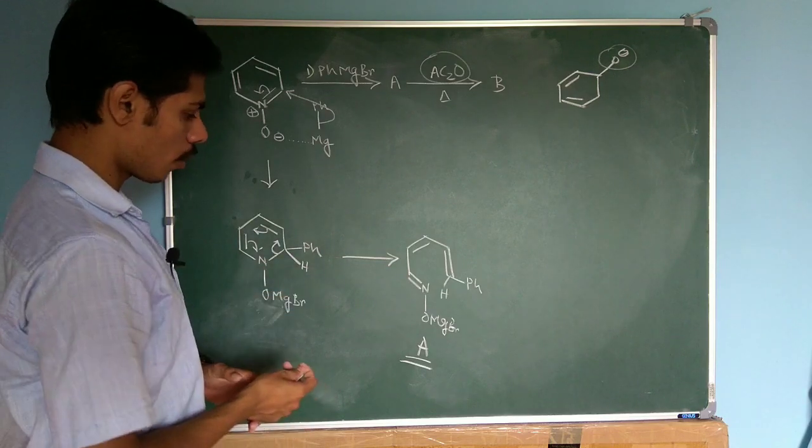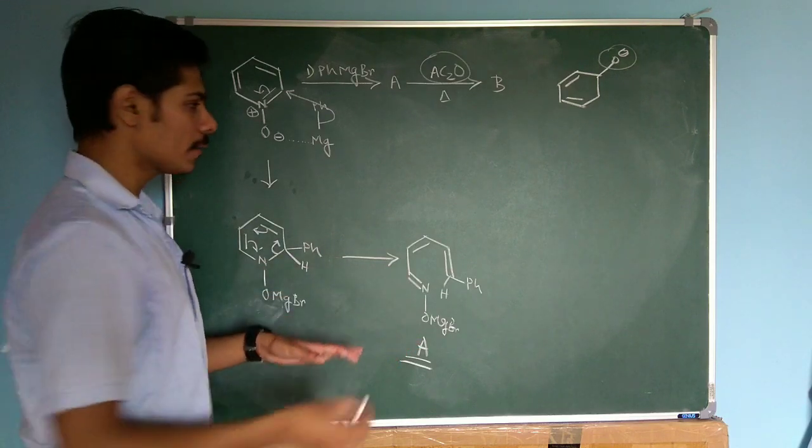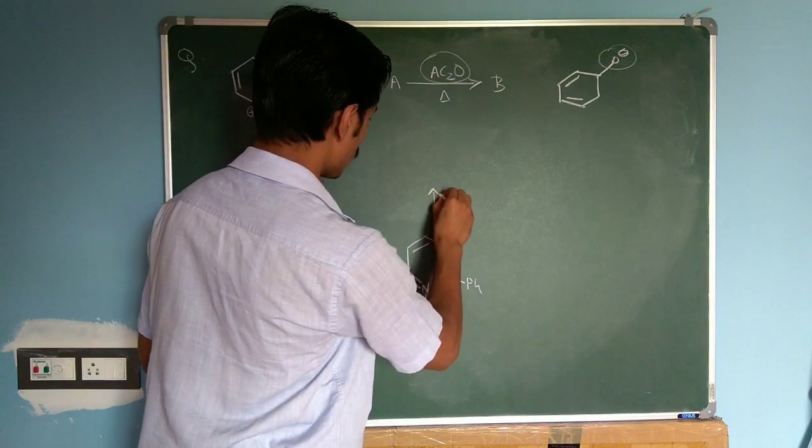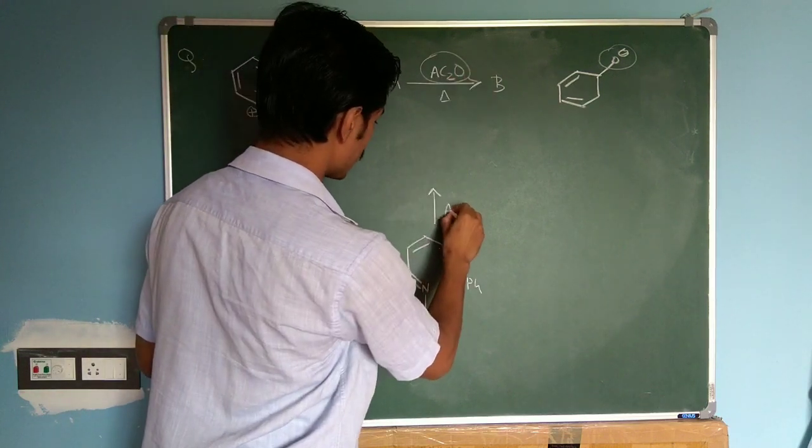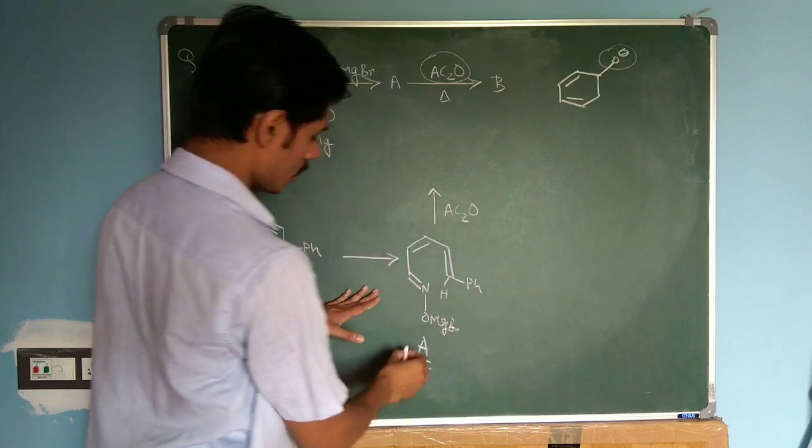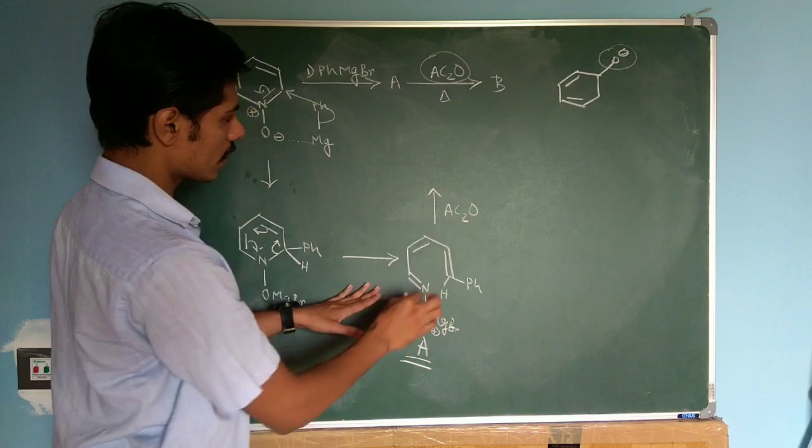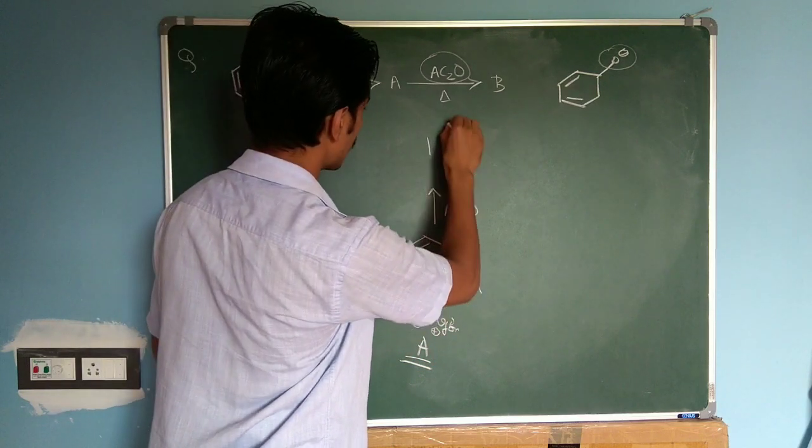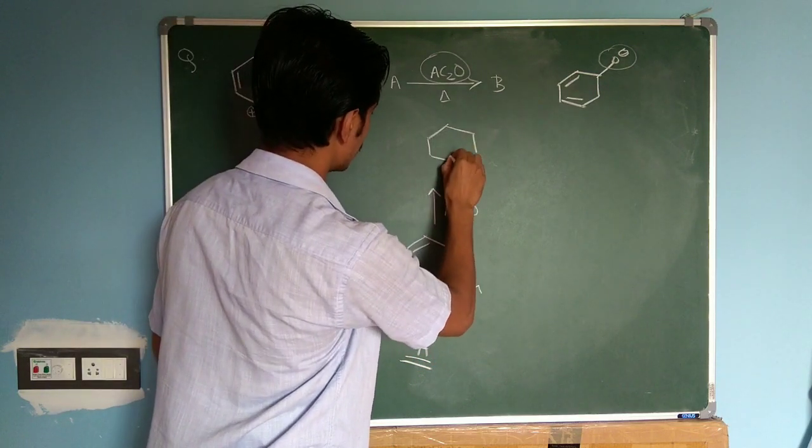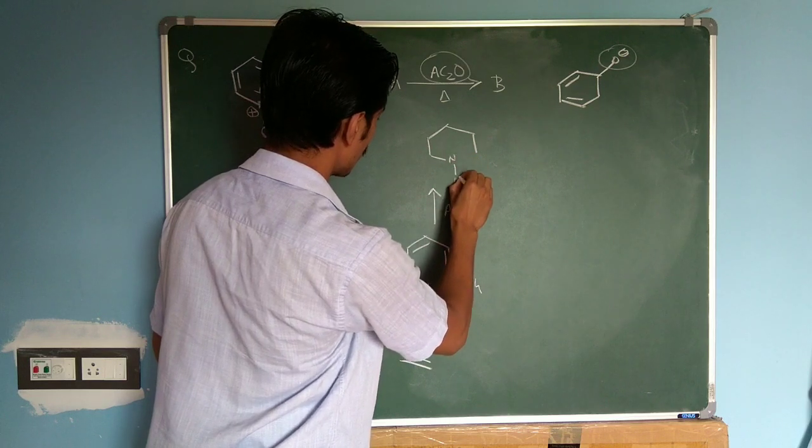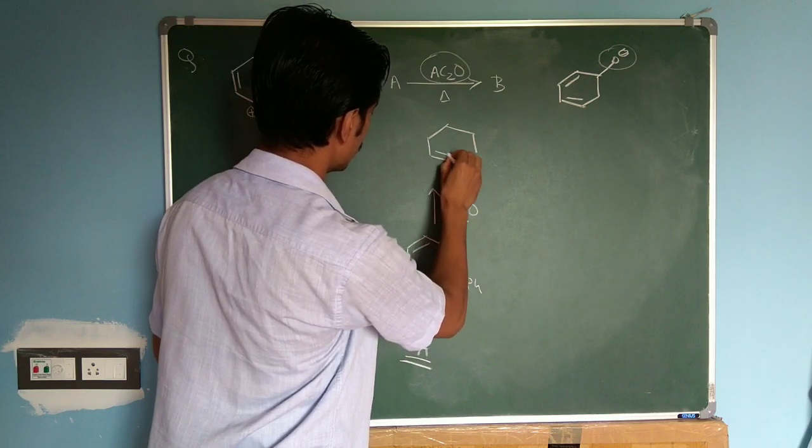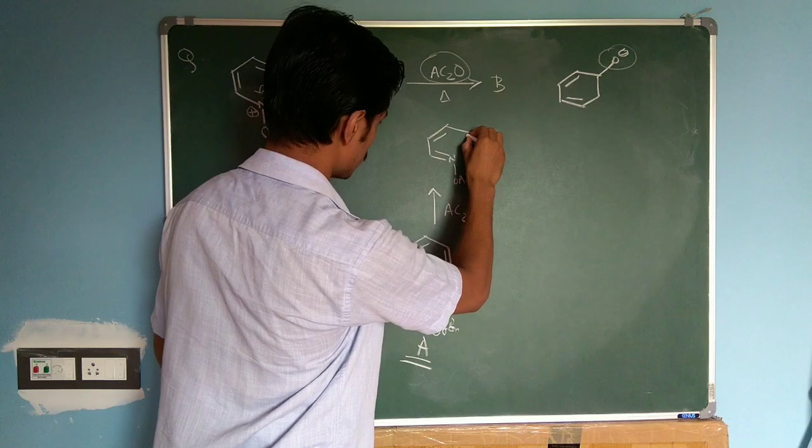So this is how the reaction will occur. This is your product A. Now you can see acetic anhydride is given. So with this acetic anhydride, this O minus Mg plus, the O minus can attack over the acetic anhydride and that will generate OAc over here.